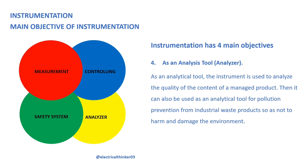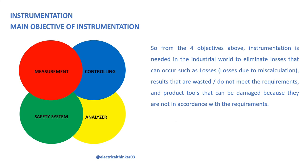So from the four objectives above, instrumentation is needed in the industrial world to eliminate losses that can occur, such as losses due to miscalculation, results that are wasted, do not meet the requirements, and product tools that can be damaged because they are not in accordance with the requirements.